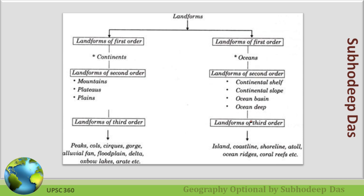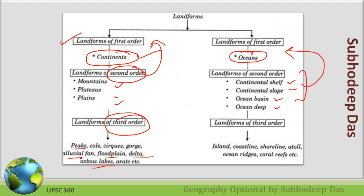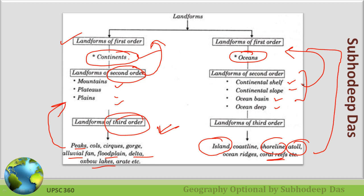To summarize: first-order landforms are continents and oceans. Second-order landforms superimposed over the first-order include mountains, plains, and plateaus on continents, and continental shelves, continental slopes, ocean deeps, and ocean basins in the ocean. Third-order landforms — like peaks, floodplains, oxbow lakes, deltas, and alluvial fans — are superimposed over second-order landforms on the continent. In the oceanic part, islands, coral reefs, shorelines, and atolls are examples of third-order landforms.